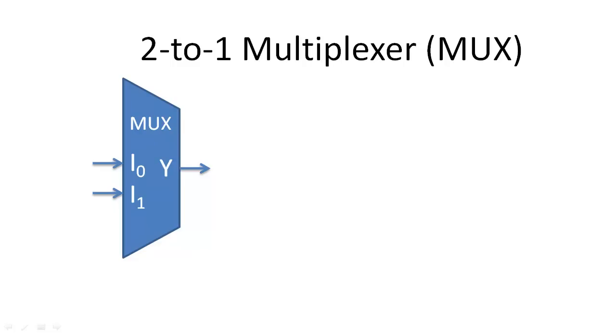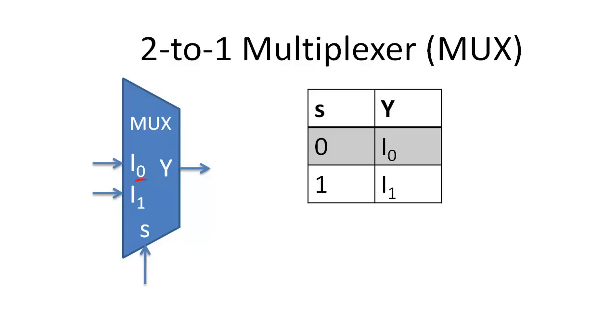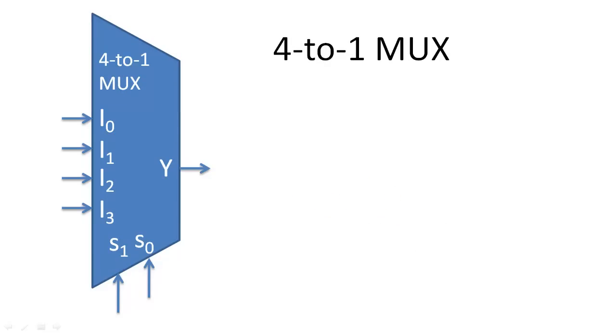We index the data inputs starting at 0 and we place the selection input bits here. We index the inputs so that the binary number encoded by the selection inputs matches the index of the input bits. If we want to select between more data inputs, we simply need to increase the number of selection inputs so that they encode the number of data inputs.